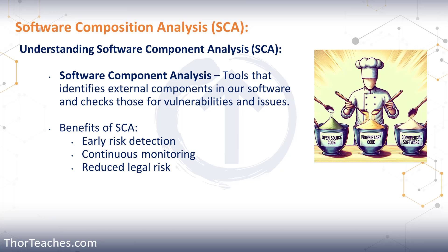Let's start by looking at what we mean by Software Composition. The software we build today is not really made entirely from scratch. Most often, we assemble it from a variety of components — that can be proprietary code, commercial off-the-shelf software (COTS), and it can be open source libraries and frameworks. By doing that, we can rapidly build and deploy new features and capabilities because we leverage pre-existing, tested code.